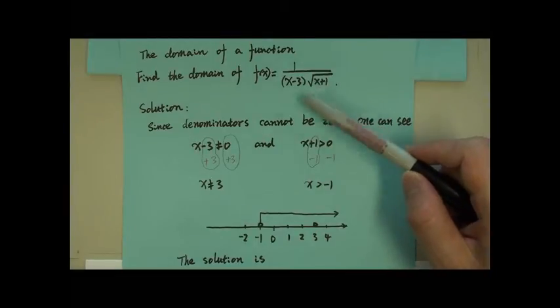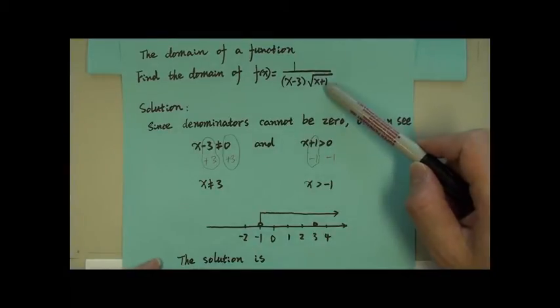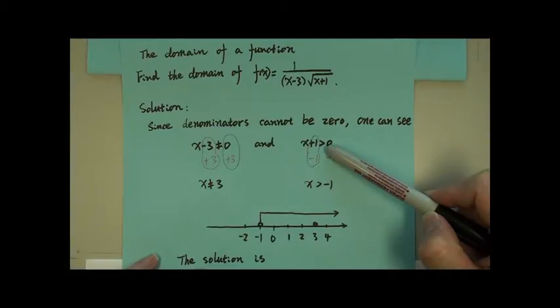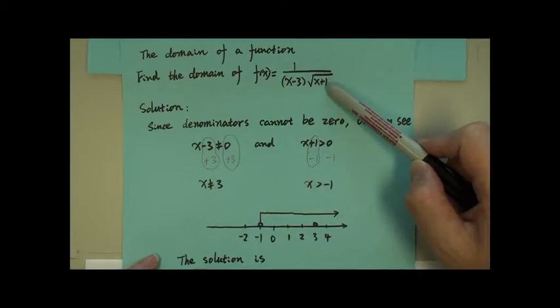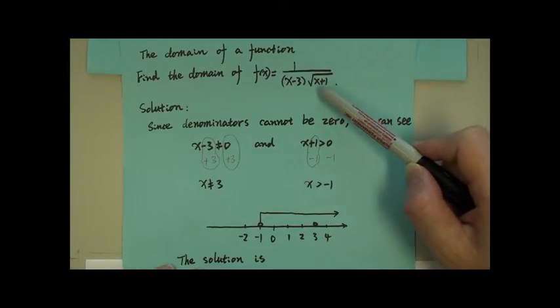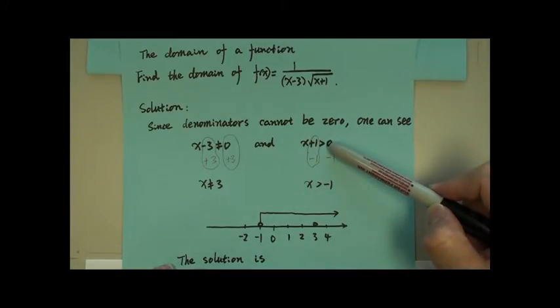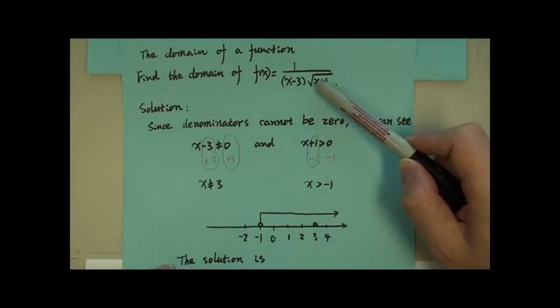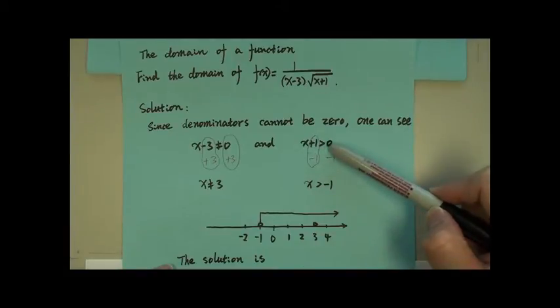Now in this radical sign, x plus 1 cannot be negative. Can it be zero? For sure not. So here x plus 1 has to be a positive number. Since x plus 1 is inside the radical sign, it also requires x plus 1 has to be positive.